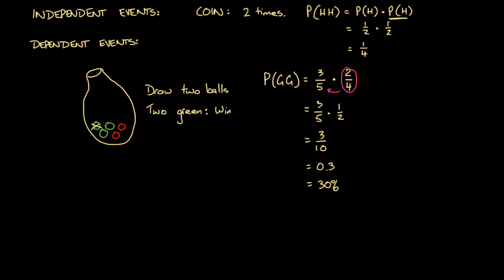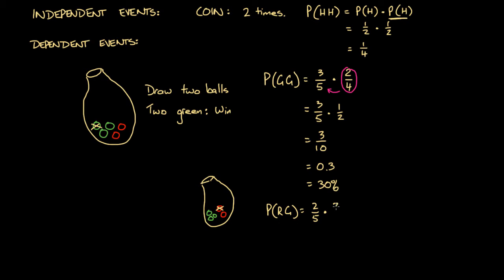Let's examine what happens if we pick out one red ball on the first draw — that's the probability of picking a red ball then a green ball. The probability of pulling out a red ball first is two over five, since there are two red balls and five balls total. After removing one red ball, there are four balls left and three of them are green, so the probability of picking a green ball is three over four. This shows that the probability of picking a green ball is dependent on the outcome of the first draw.